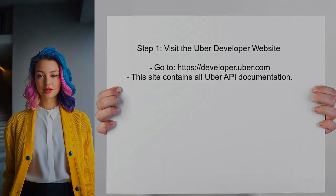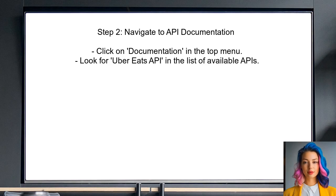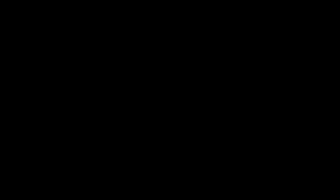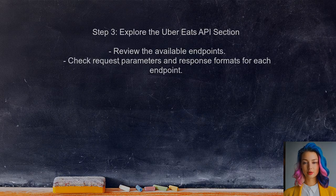To find the detailed API for Uber Eats, start by visiting the official Uber developer website — this is the primary source for all Uber-related APIs. Next, navigate to the API documentation section, where you can find specific information about the Uber Eats API. Once in the Uber Eats API section, you will find detailed information including endpoints, request parameters, and response formats.